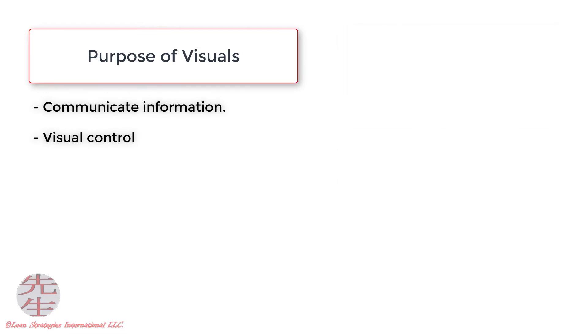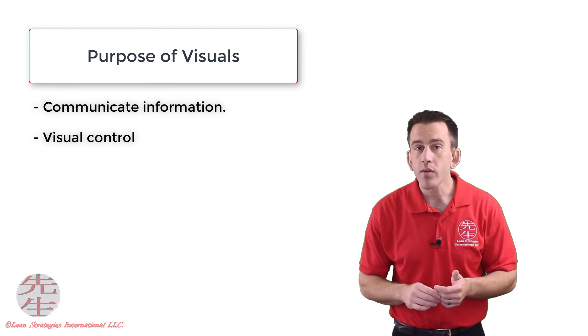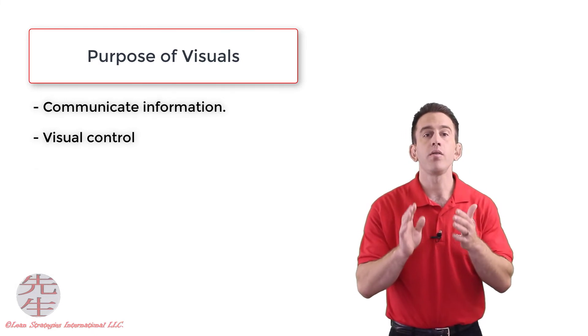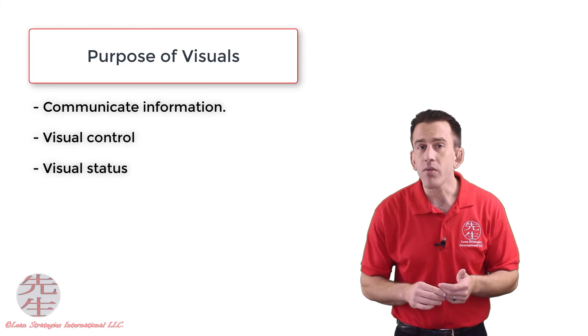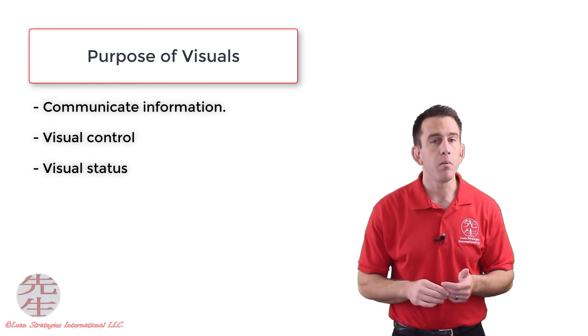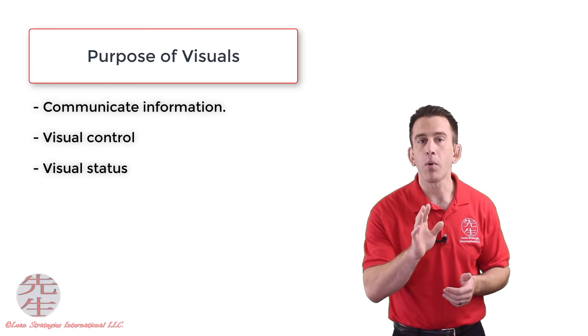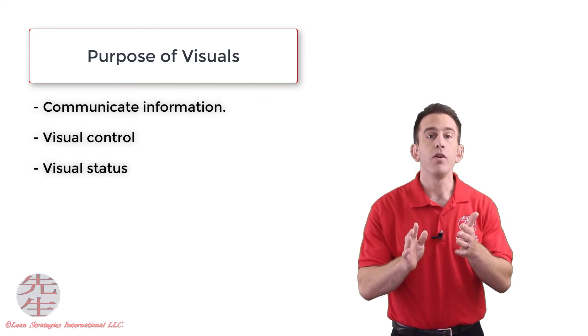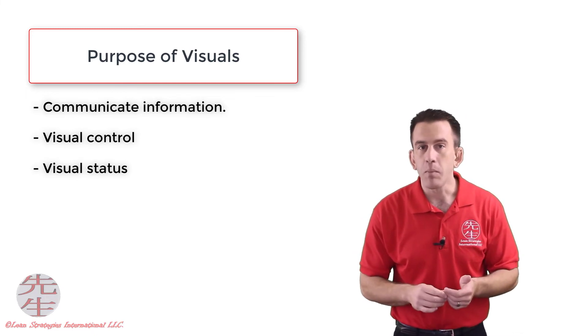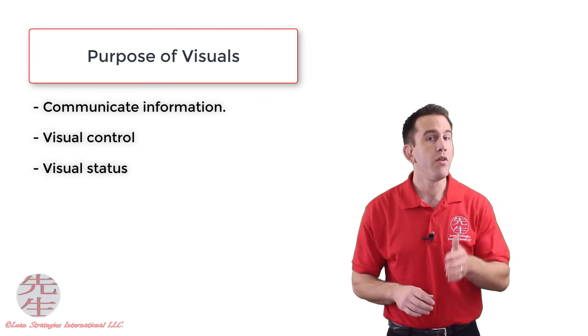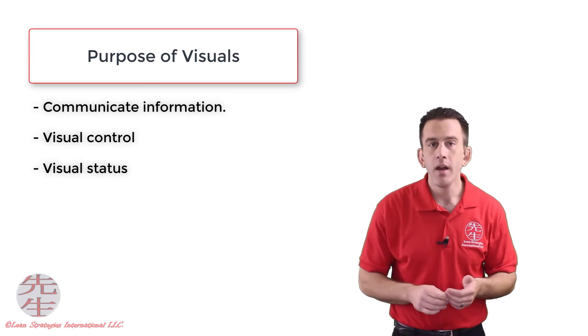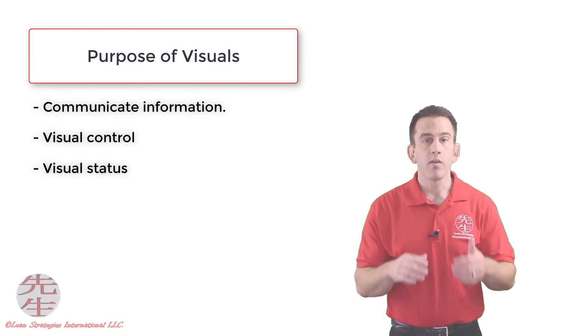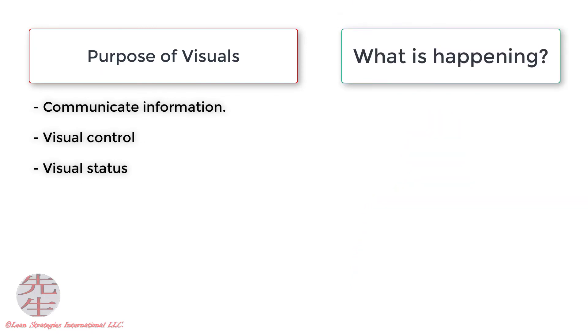The final type of visual we will discuss before moving on is a visual status. These types of sensory notifications communicate the status of a process, machine, or a department. These visual statuses can be referred to as a form of visual management too. In general, they will answer questions such as: What is happening? Or how are we performing?